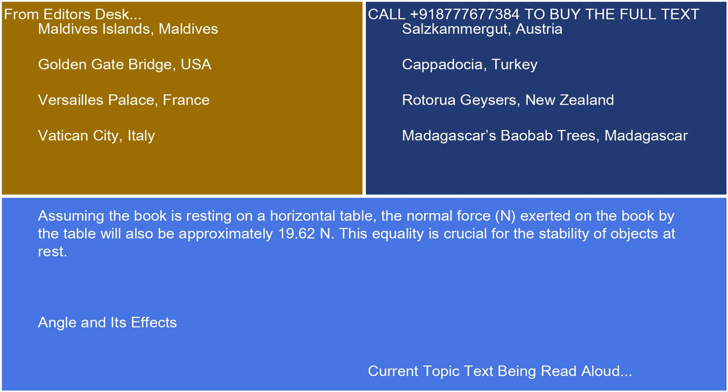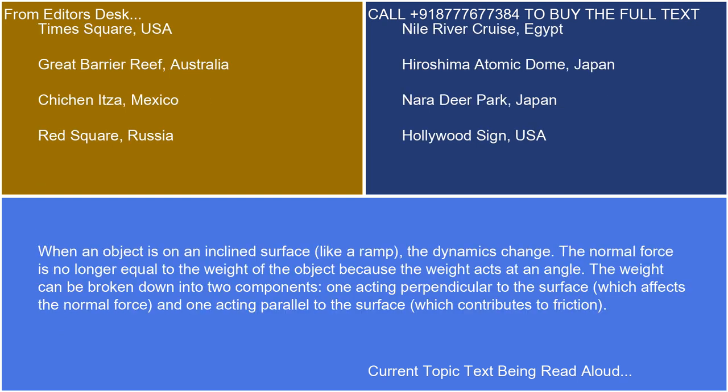This equality is crucial for the stability of objects at rest. When an object is on an inclined surface, like a ramp, the dynamics change. The normal force is no longer equal to the weight of the object because the weight acts at an angle. The weight can be broken down into two components: one acting perpendicular to the surface, which affects the normal force, and one acting parallel to the surface, which contributes to friction.